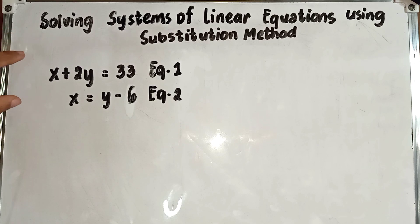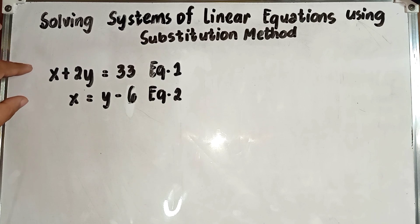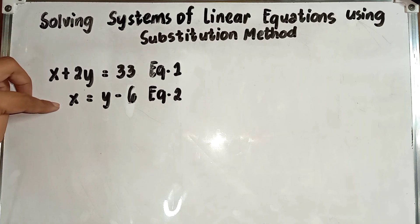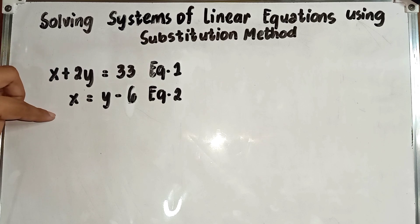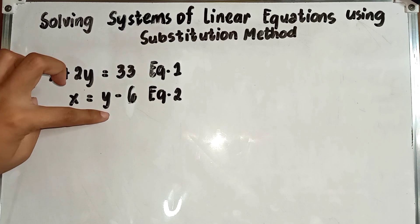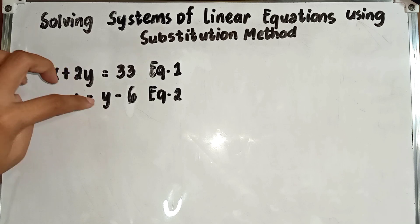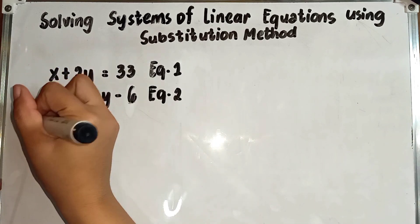For example, number one. We have here a system of linear equations. Equation 1: x plus 2y is equal to 33. Equation 2: x is equal to y minus 6. Equation 2 says that x is equivalent to y minus 6. Thus, we can substitute y minus 6 for x in the first equation.